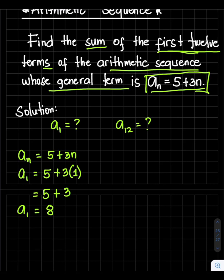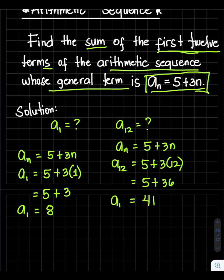That is our last term. So a_n = 5 + 3n. Again substitute: a_12 = 5 + 3(12) = 5 + 36 = 41. So the 12th term is 41.